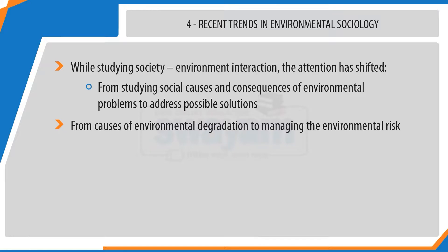Let us now discuss the fourth topic of the lecture: recent trends in environmental sociology. While studying the nature and society interaction, environmental sociology has shifted from studying the social causes and consequences of environmental degradation to address possible solutions to these environmental problems. In other words, environmental sociology has shifted from focusing on the causes of environmental degradation to managing the environmental risk produced by this degradation.